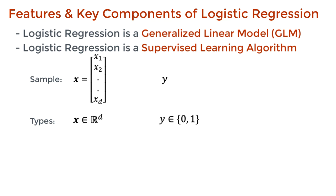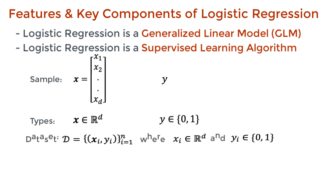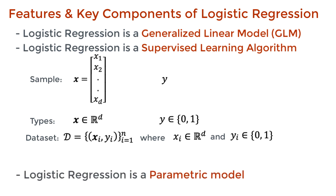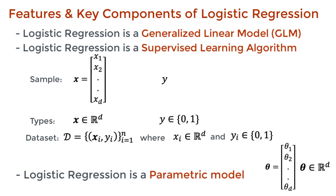We can take n such samples and construct a dataset represented by some capital D. Logistic regression is a parametric model — the model itself is characterized by a fixed set of parameters. Let's call these parameters collectively theta. In this context, theta is the weights of each feature, and as such it is a vector that has the same dimensions as the feature vector x_i.